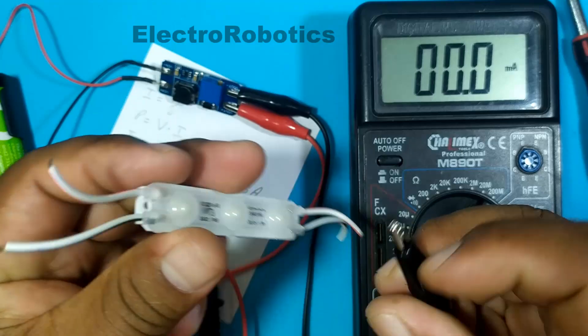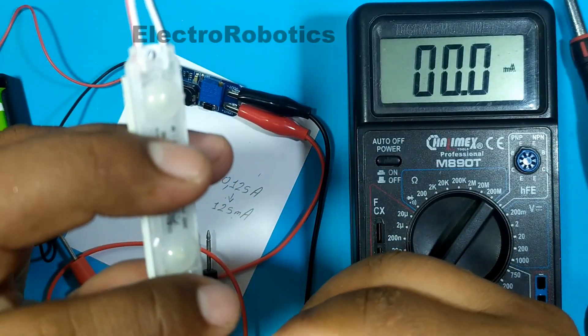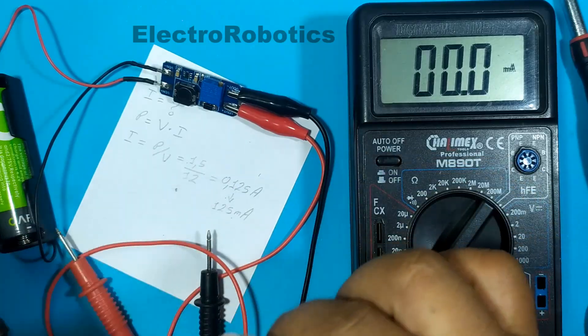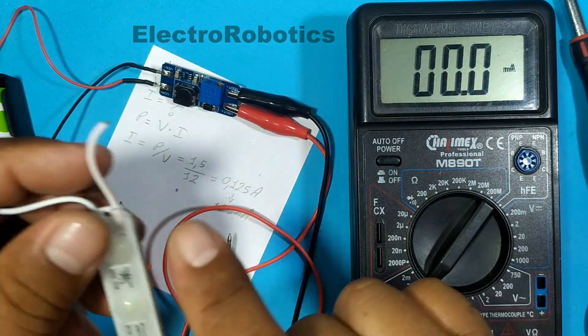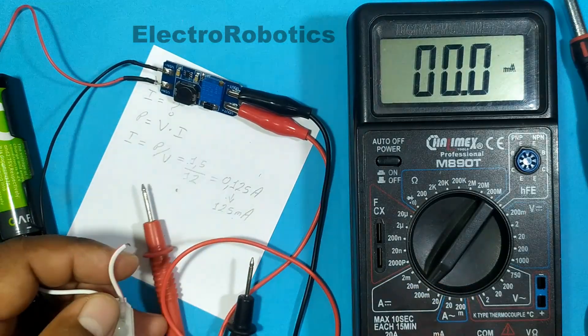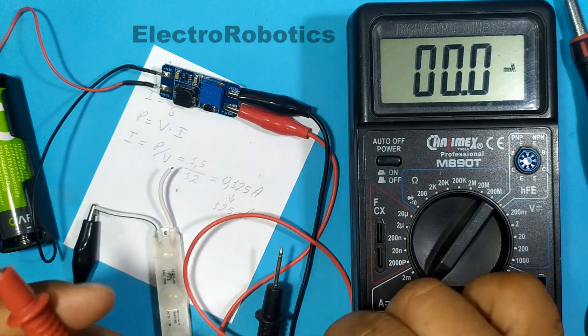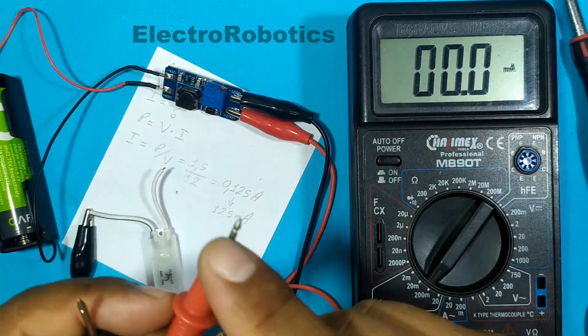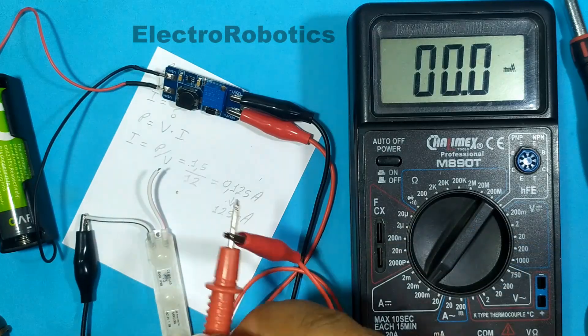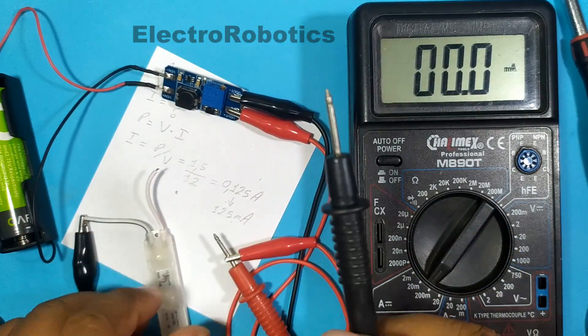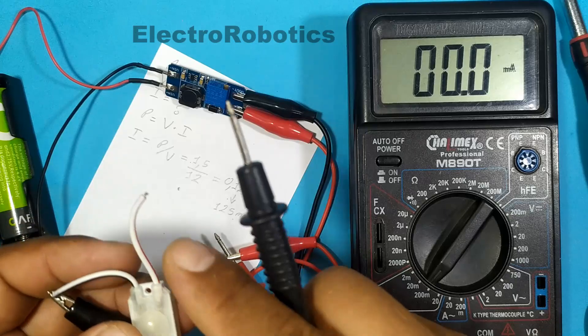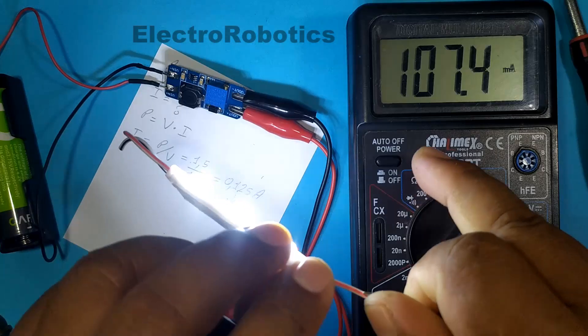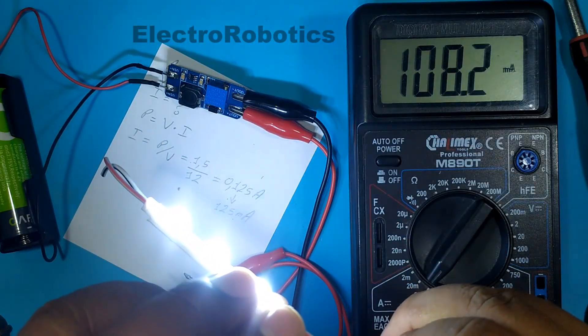We will connect the negative directly. We will connect the positive with the tips of the multimeter. We connect the positive to the positive of the multimeter. And the negative of the multimeter we connect to the positive of the module. And we verify the current which is 108 milliamps.